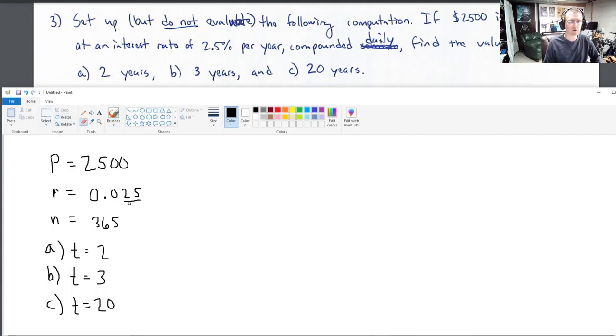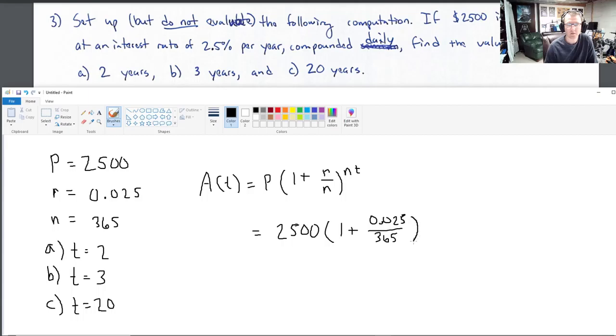So, let's go ahead and set this up now. We're going to use the compounding formula, not the continuous A equals PE to the RT formula. We're going to use the compounding formula, which is A of T. So, it's a function of time equal to your principal amount times 1 plus the rate over N all to the NT power.